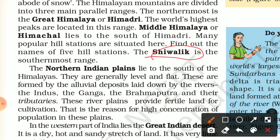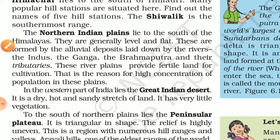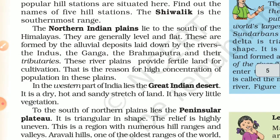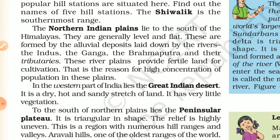The northern Indian plains lie to the south of the Himalayas. They are generally level and flat, formed by deposits laid down by rivers. The main rivers are the Indus, the Ganga, the Brahmaputra, and their tributaries. This northern Indian plain is very fertile land.